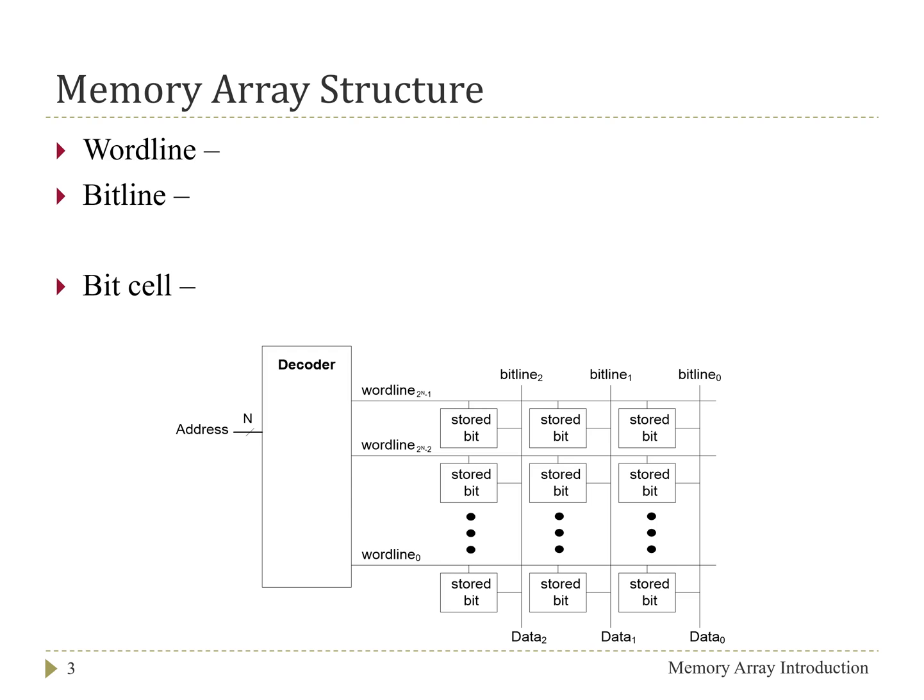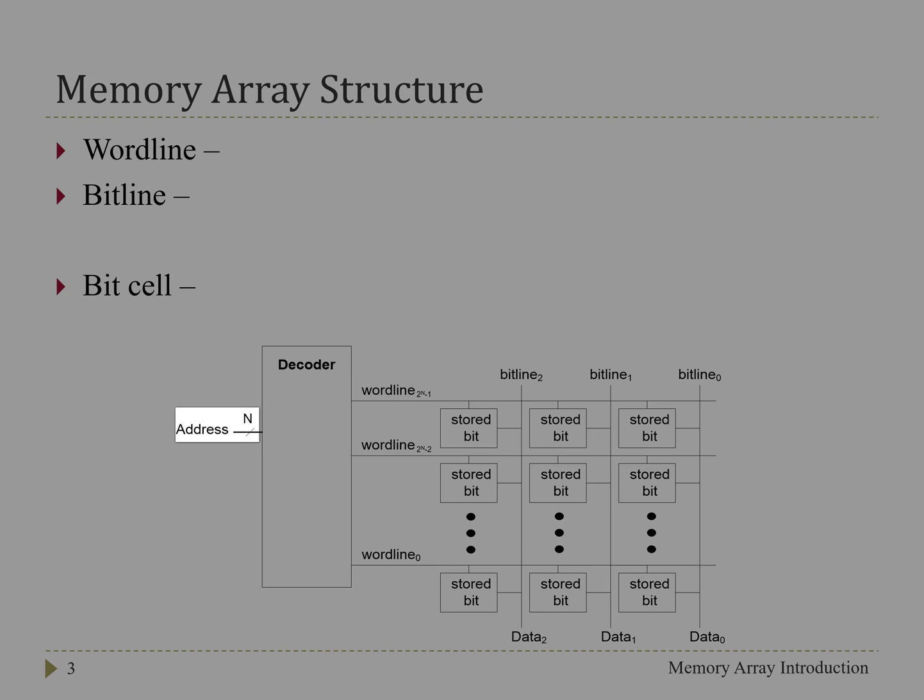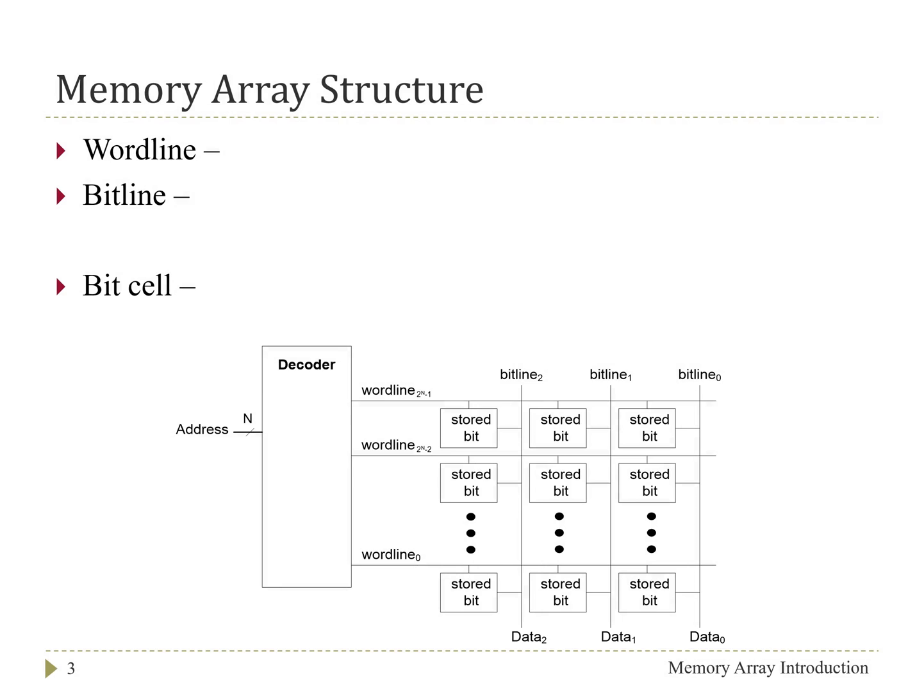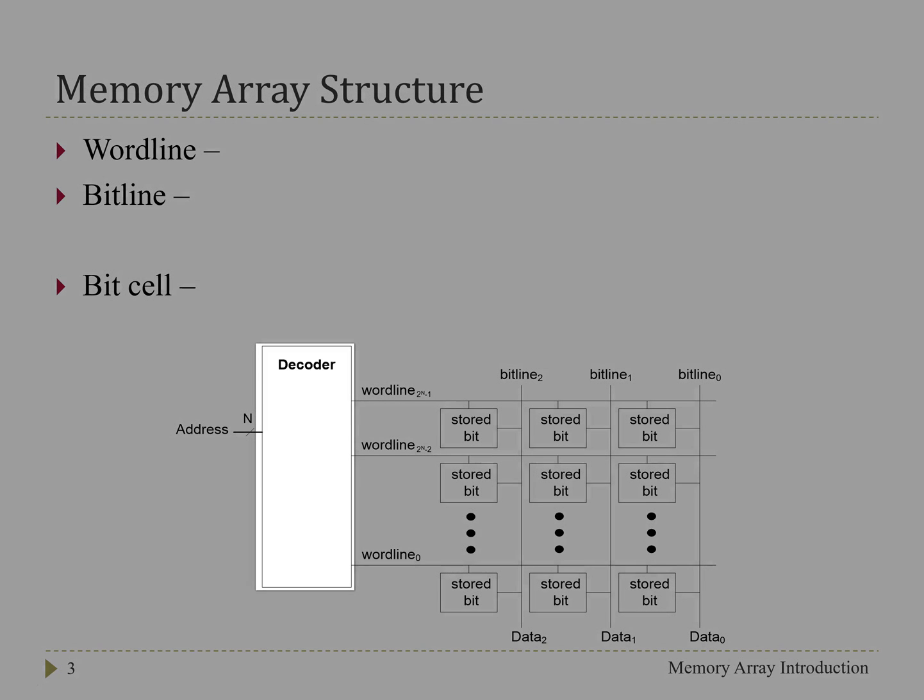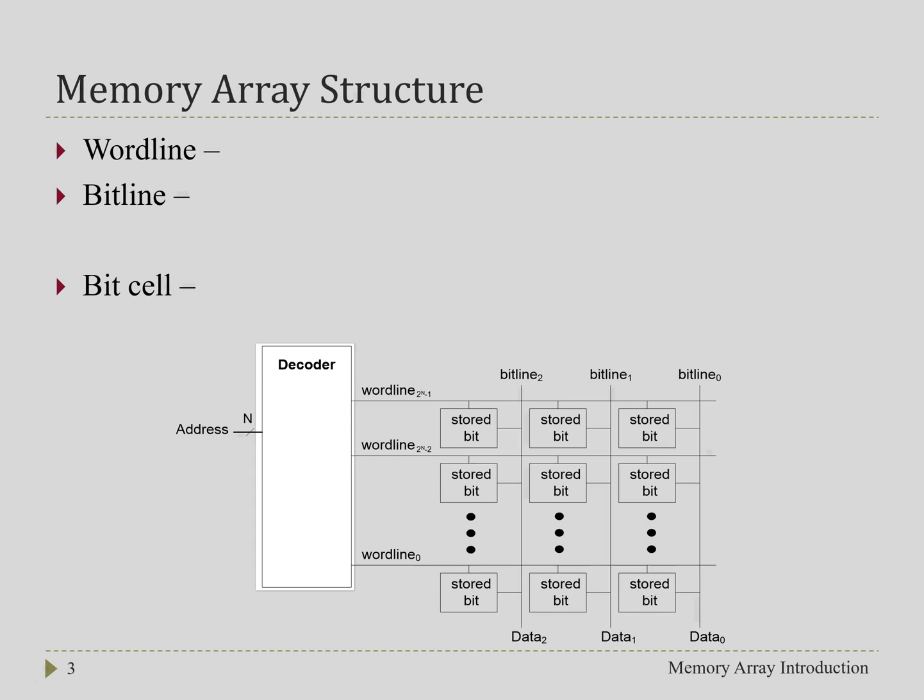When it actually comes to implementation in digital hardware, we need a little bit more. This figure here shows the general structure of a memory array. We still have our n bit address going in and we have our m bits, in this case 3 bits of data coming out. To select one of the rows in this array, we take the n bit address and feed it into a decoder. That decoder will activate one of the entries within the array. And what is activated is referred to as the word line. So this is the horizontal line that activates a single row.